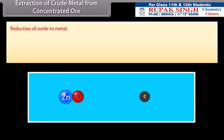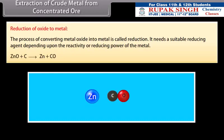Reduction of oxide to metal. The process of converting metal oxide into metal is called reduction. It needs a suitable reducing agent depending upon the reactivity or reducing power of the metal. For example, carbon, carbon monoxide, aluminium and magnesium.